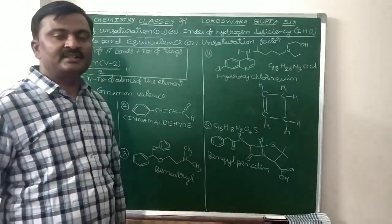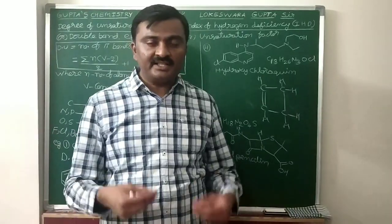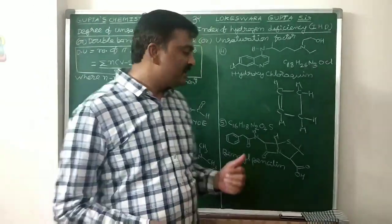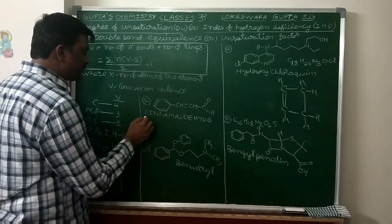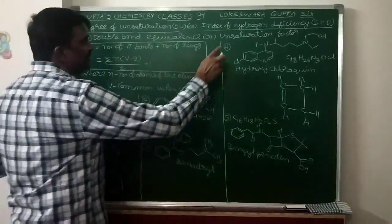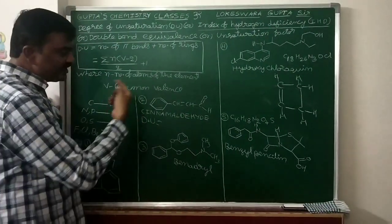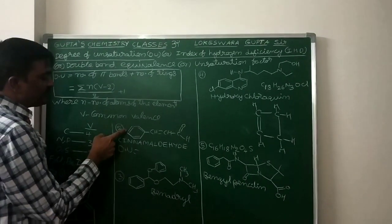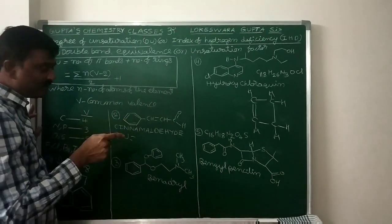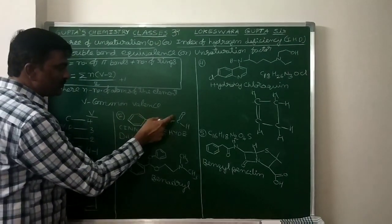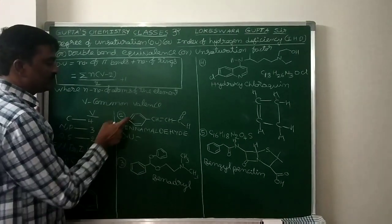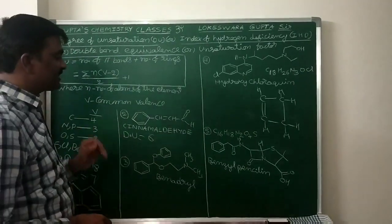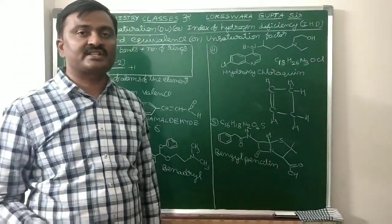Now come to cinnamaldehyde. Cinnamaldehyde is a flavoring agent used in making biryani. What is the degree of unsaturation? Structure is provided. How many pi bonds? 1, 2, 3, 4, 5 pi bonds. Plus 1 ring. So degree of unsaturation of cinnamaldehyde is 6.